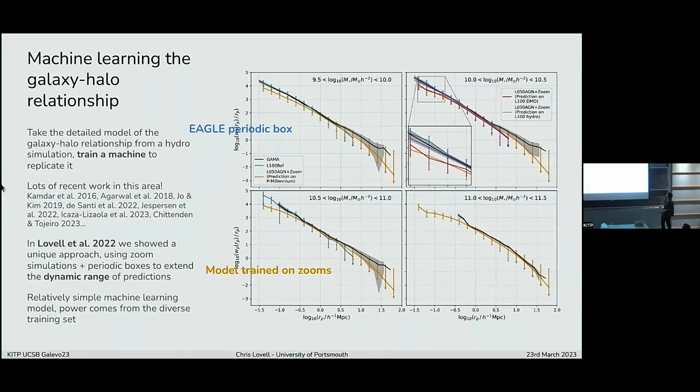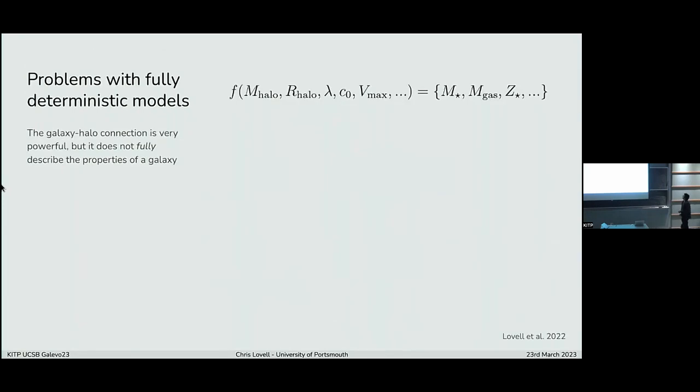And so this is some of the results that we actually get out. The orange line here is the original periodic eagle box. So you have pretty poor statistics at this high mass end. This is what you get if you just train on a 50 megaparsec box. Clearly, you're not able to predict these massive objects. Here's what you get when you train on the zooms as well, and then apply this to a much larger box. You're able to predict the galaxy stellar mass function out to a much larger dynamic range. You can also do things like clustering with this. Because of the size of this periodic box, you're only able to probe scales below a certain limit.